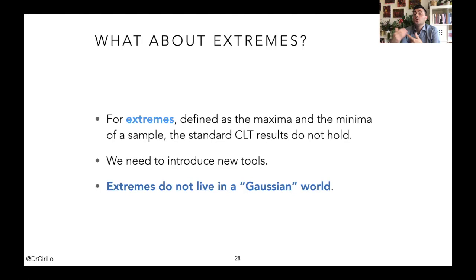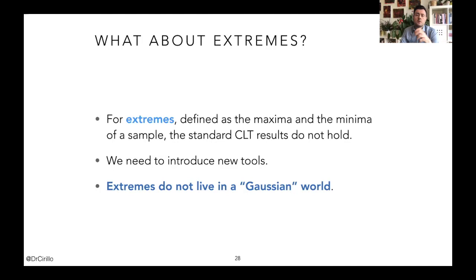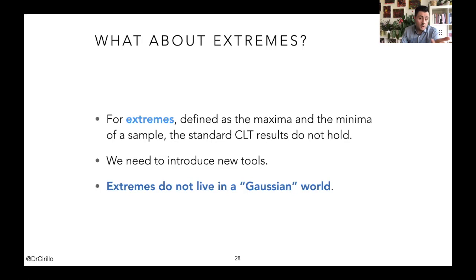We need new tools and new distributions. The question is: is there a way of defining a sort of CLT for extremes? The answer is yes. There are theorems that give us conditions for the limiting behavior of extremes under certain assumptions. Some of these results were developed by very important Dutch mathematicians like Laurens de Haan and Guus Balkema. One of the theorems we will consider is, for example, the Pickands–Balkema–de Haan theorem.